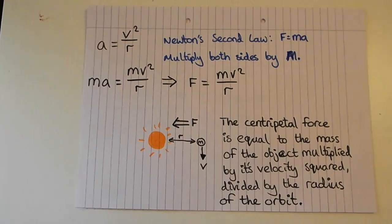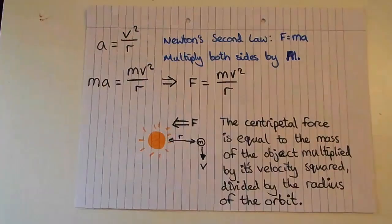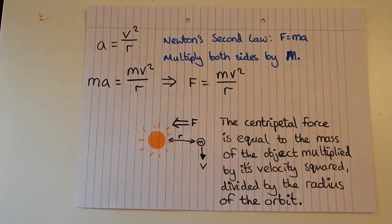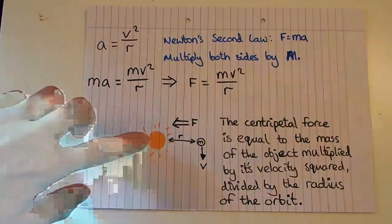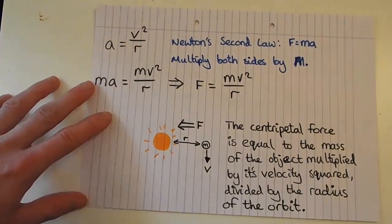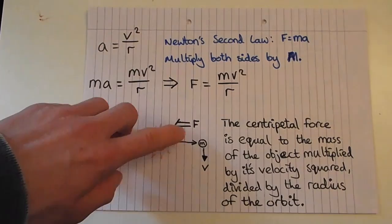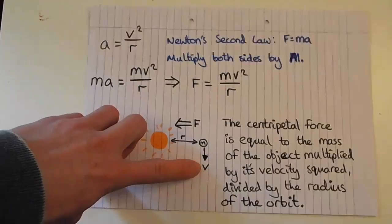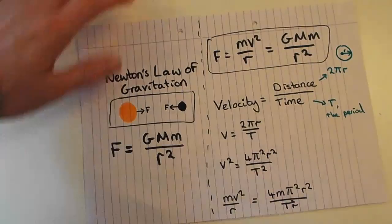Next we take Newton's second law: F = ma. Multiplying both sides by mass m gives ma = mv²/r, so the centripetal force acting on an object in circular motion equals the mass of the object times its velocity squared divided by the radius. In this setup we have a planet of mass m orbiting at velocity v at distance r from the Sun, with centripetal force F.